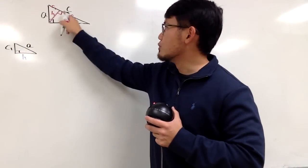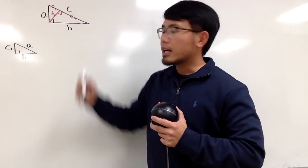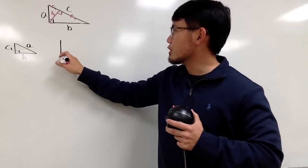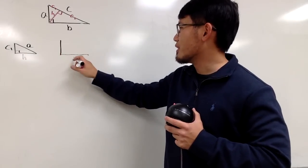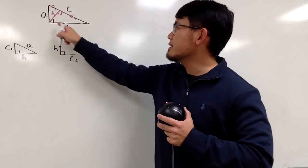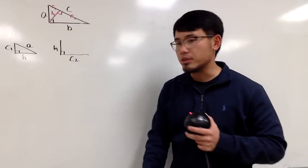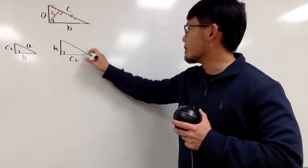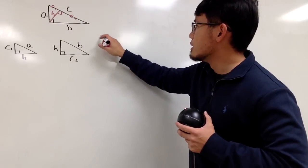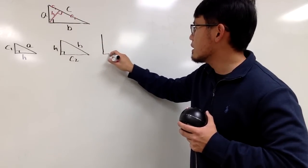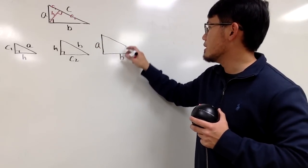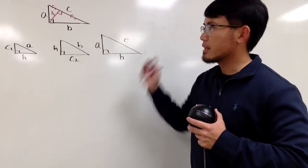For the second triangle, h is actually the smallest side, and c2 is going to be the median size side. And of course, here is the right angle, and b is actually the hypotenuse. I will also put down the original for you guys — the biggest one — namely a, b, and c.